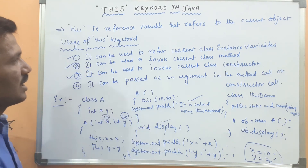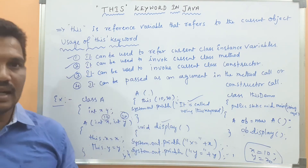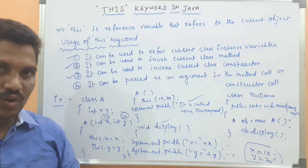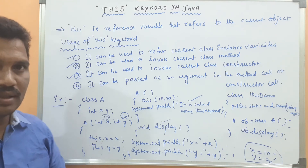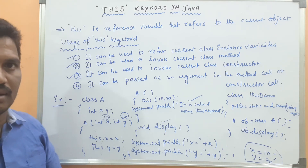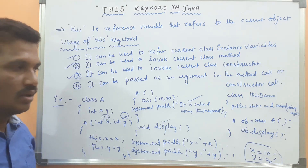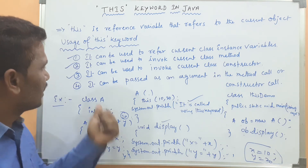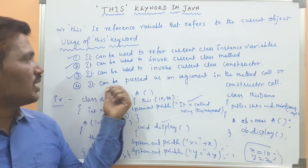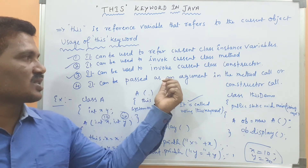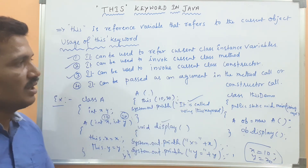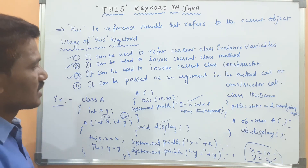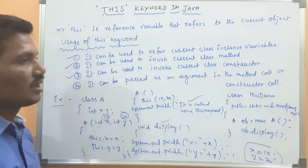This is another example for invoking the current class constructor. From the parameterized constructor we can call the default constructor, and from the default constructor we can call the parameterized constructor. Three uses have been completed. The fourth use: 'this' keyword can be passed as an argument in the method call or constructor call.